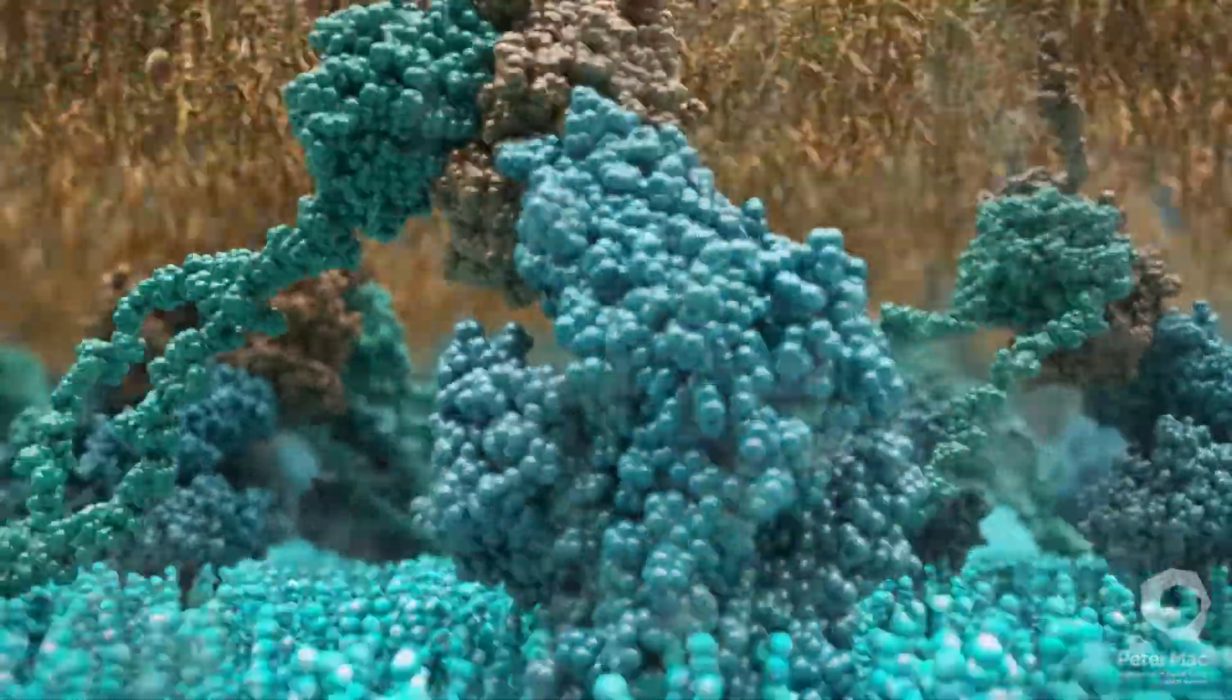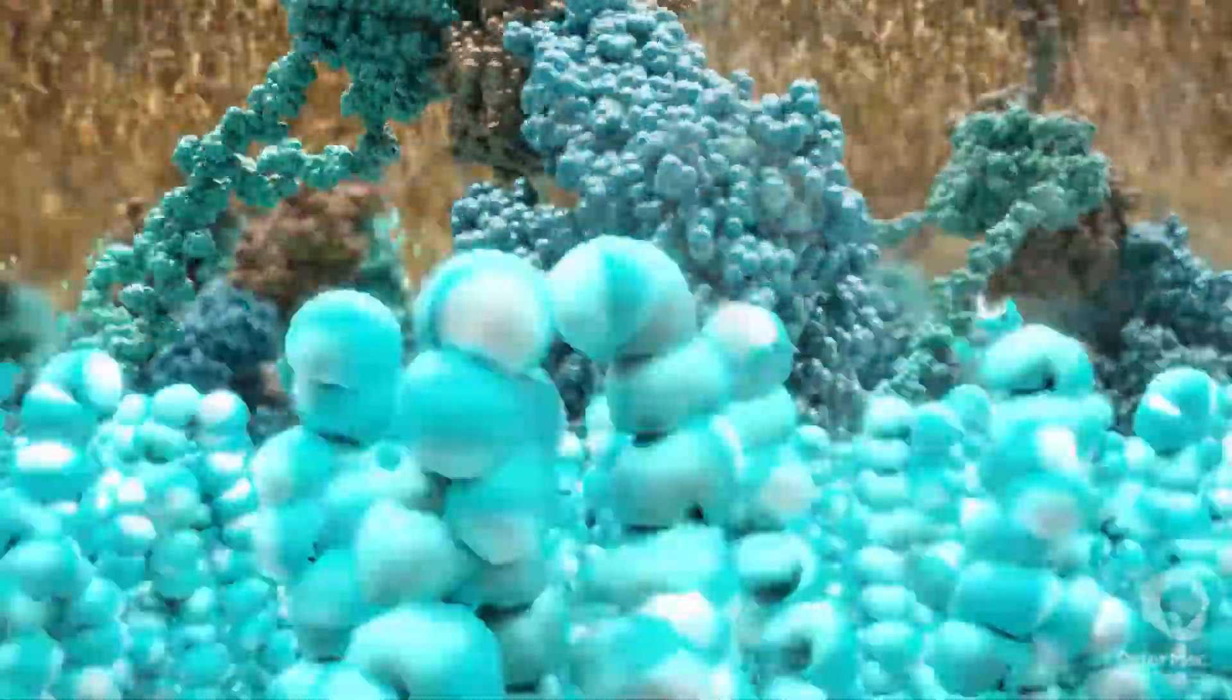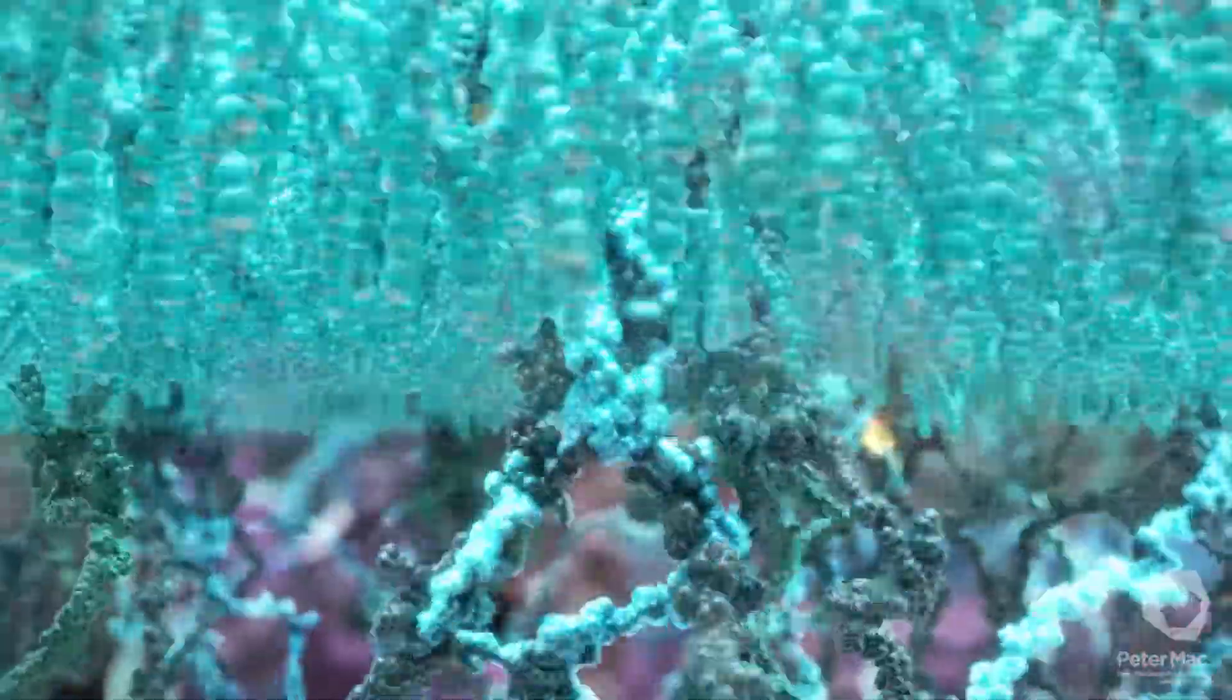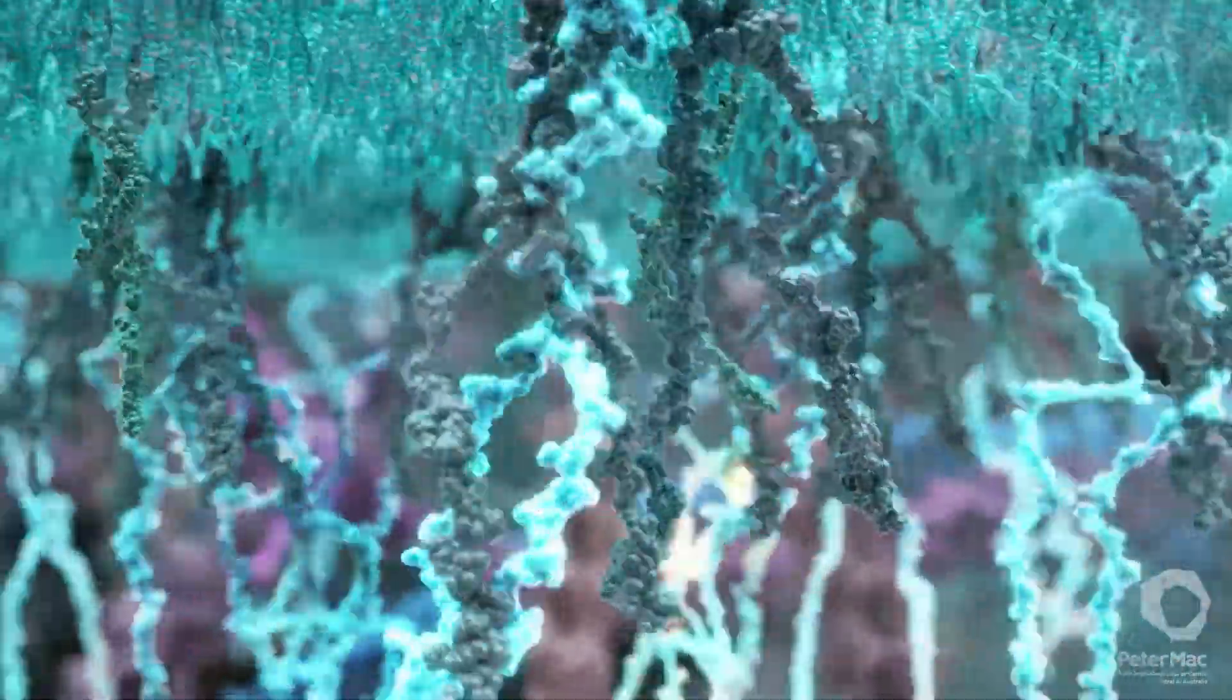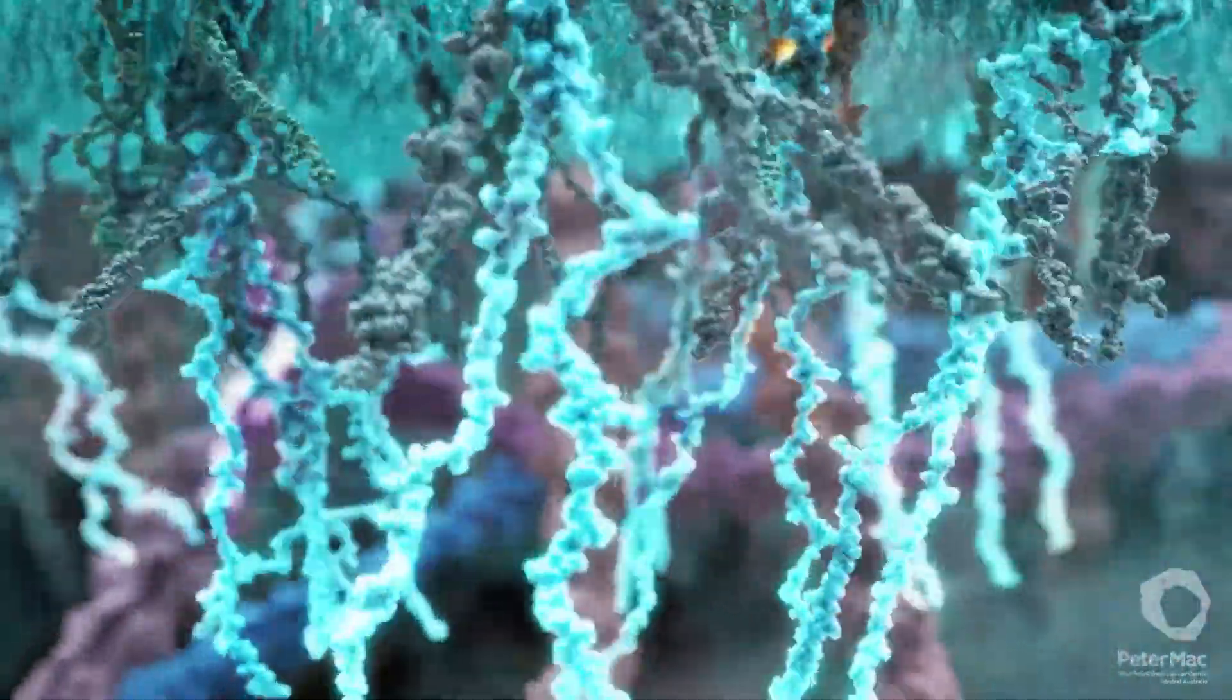We will now move below the cell surface inside the killer T-cell. These long glowing chains form the internal part of the T-cell receptor.